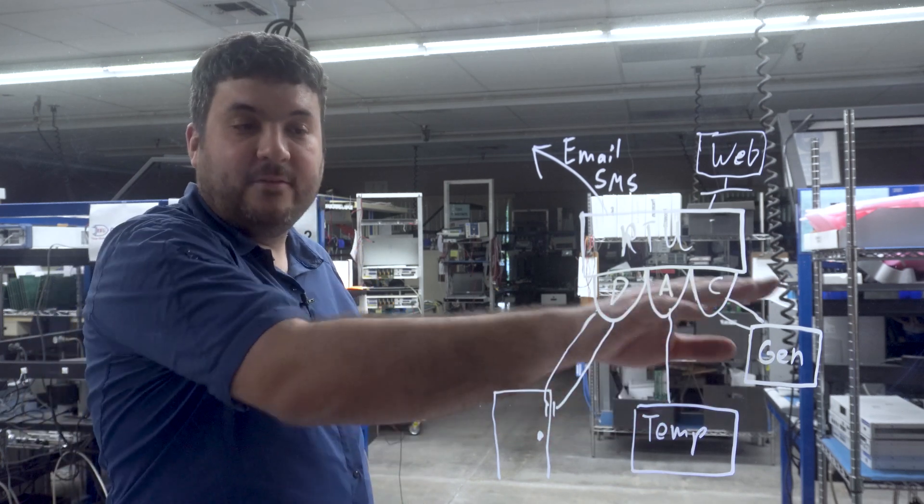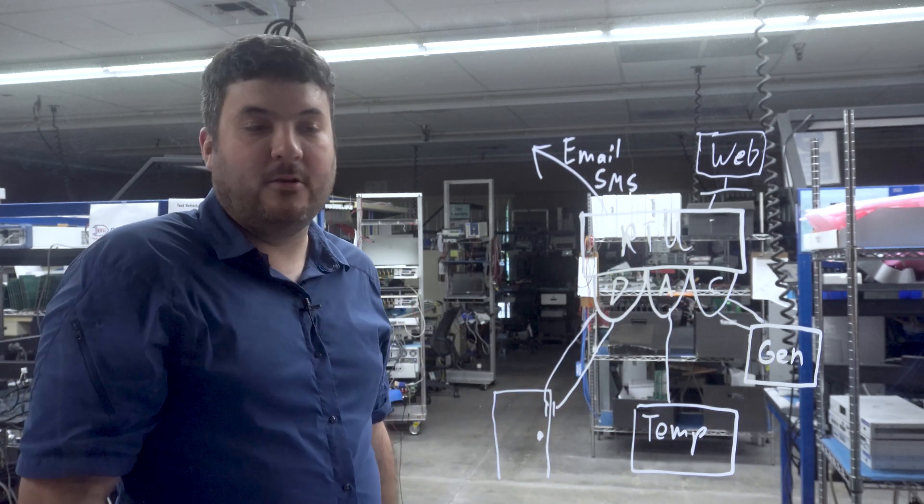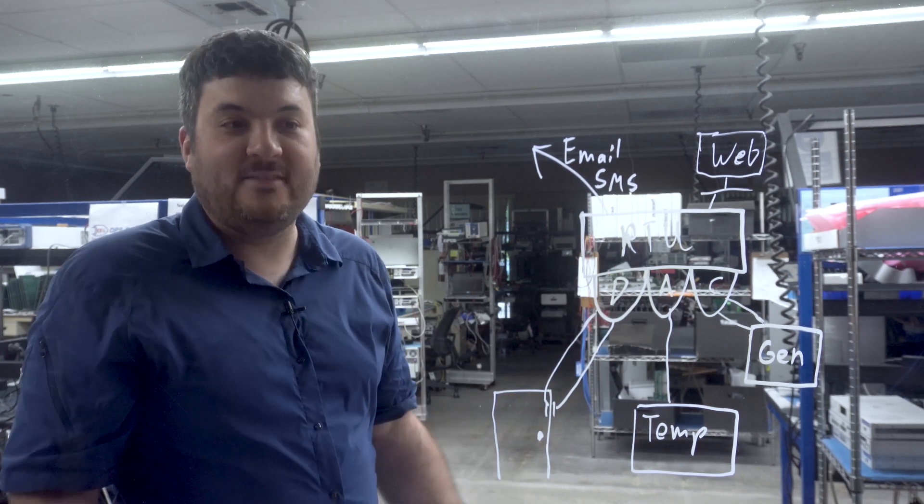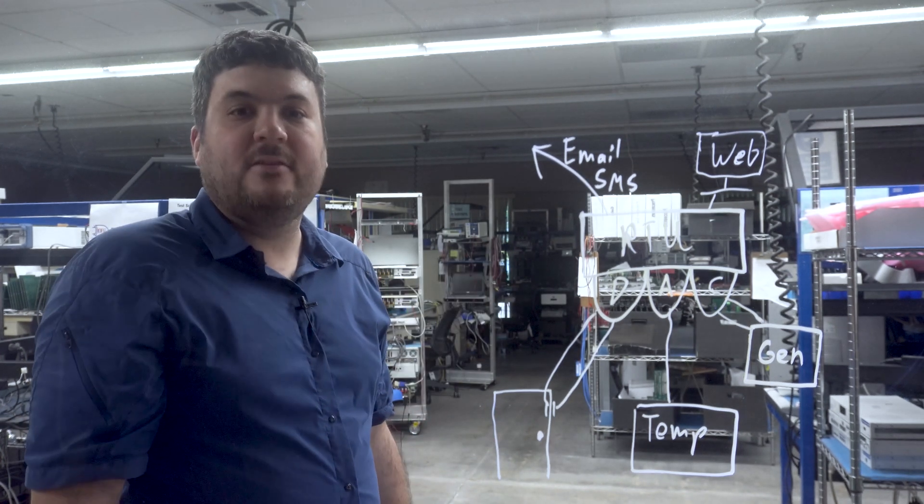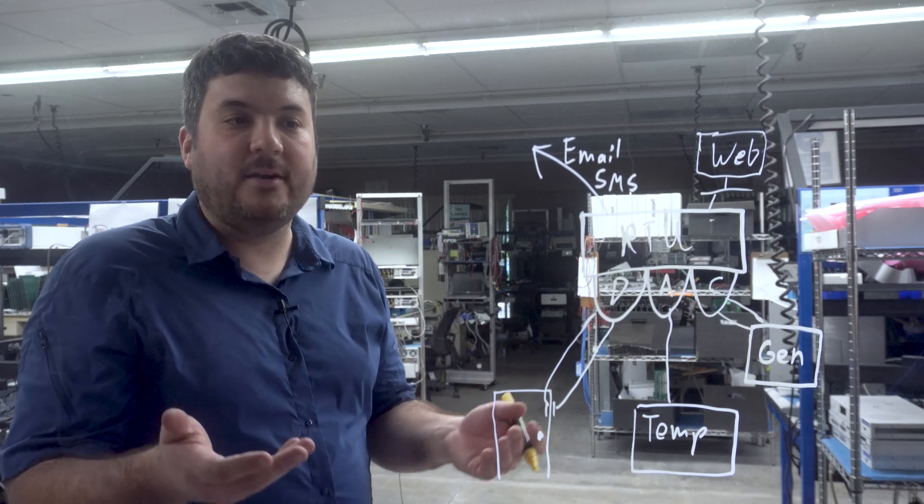You can decide what the names of all these things are so you can get useful alert messages. It won't be alarm point seven. It will be door alarm. And then you can tell it what your email address is, what your phone number is, how it's going to contact you. And that works beautifully until you have about 10 sites.